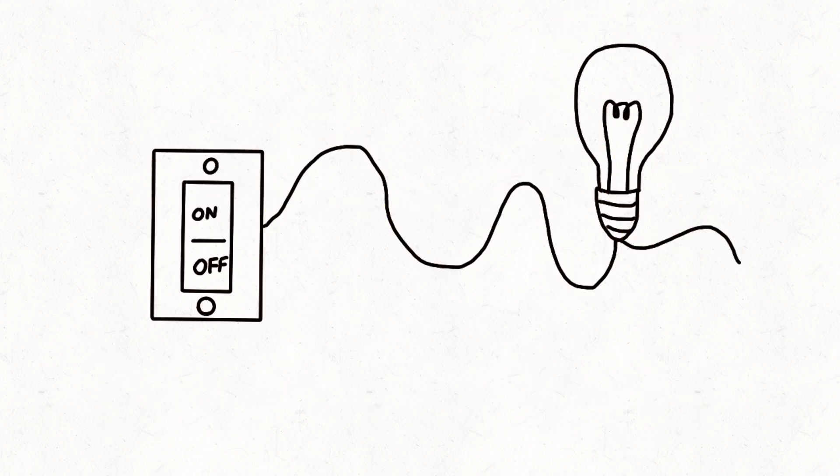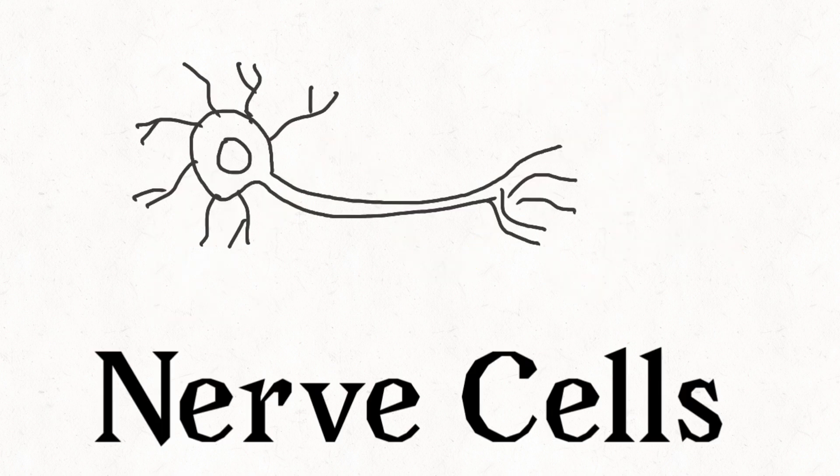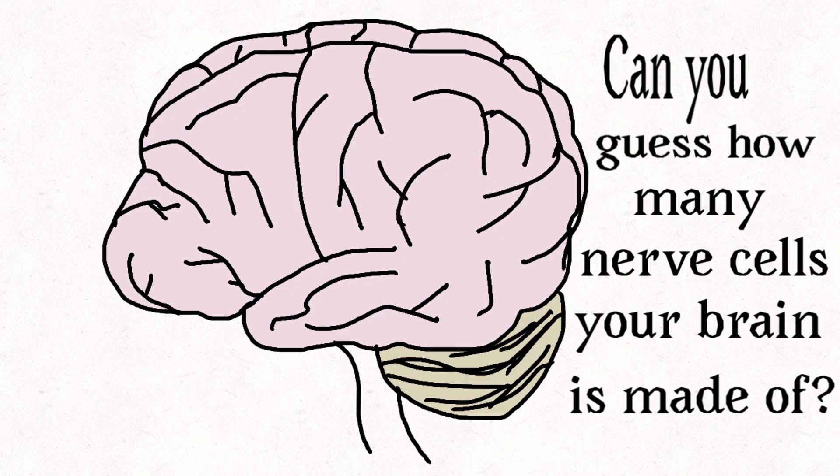Nerve cells are like the wires in your wall. They also carry electricity. There are different parts to a nerve cell. Here are the dendrites, this is the axon, and this is the cell body. Can you guess how many nerve cells your brain is made of?